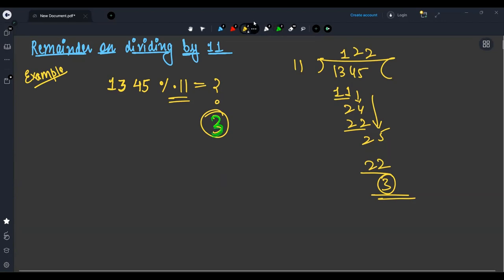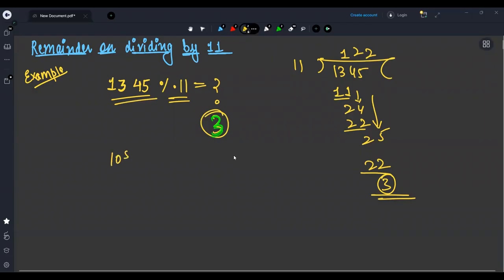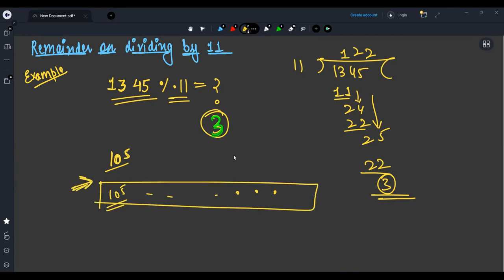So how can we find this? Can I do it normally? No. Why? Because constraints are given like the string length is 10 to the power 5. That means we have 10 to the power 5 digits - one digit, two digit, three digit until 10 to the power 5 digits.